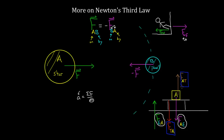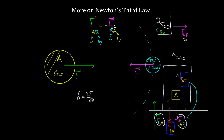The force on box A by the table and the force on the table by box A must be equal no matter what. But the force on box A by the table does not have to be equal and opposite to the force on A by the Earth — that only happens when there's no acceleration. If we stuck the whole situation into an elevator accelerating upward, the partner forces within each pair must still be equal, but the upward force on the box must now be bigger than the gravitational force on the box, so those two won't be equal.